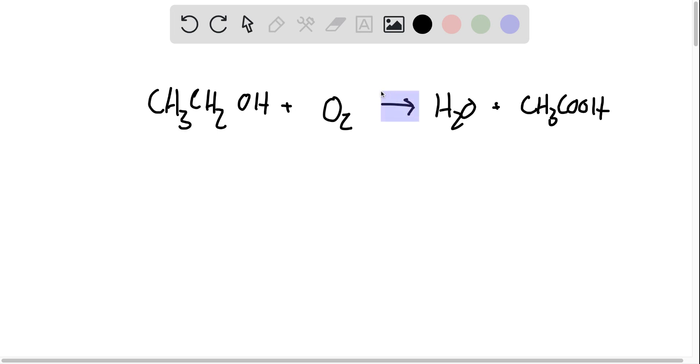And we are asked to determine how many moles of acetic acid will be produced when we have 0.090 moles of O2. So how do we figure this out?